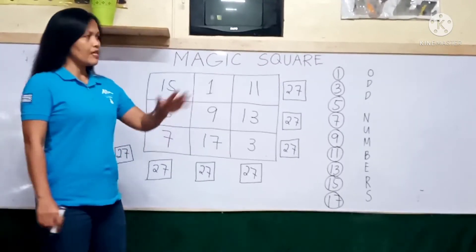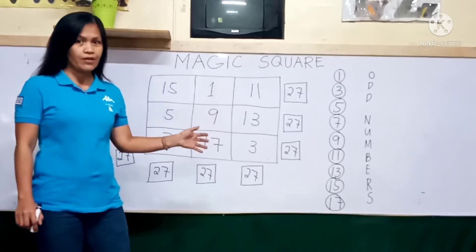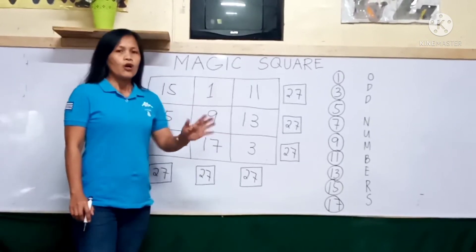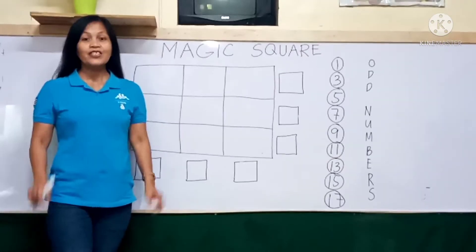You have observed that in this process, we have started with the least number. How about if we have started with the largest number, which is 17.